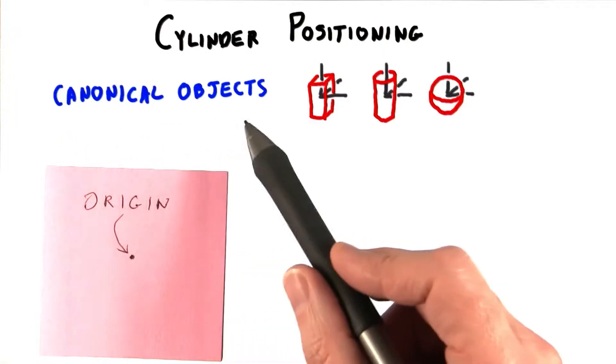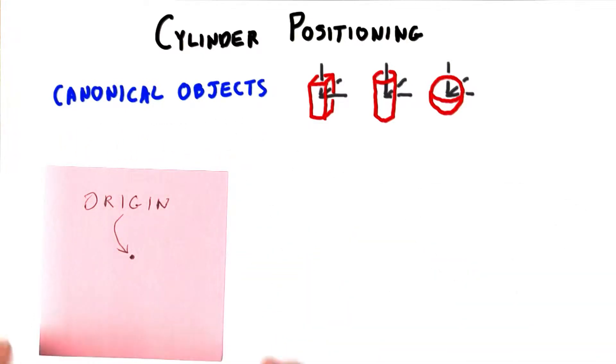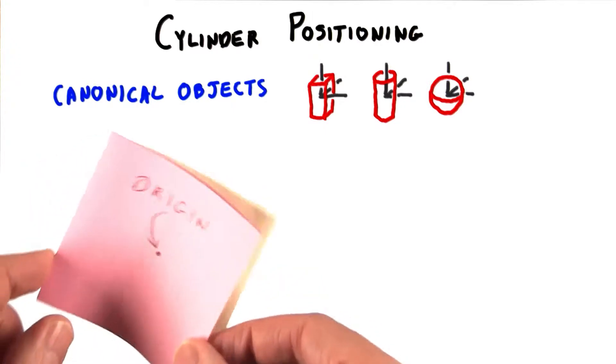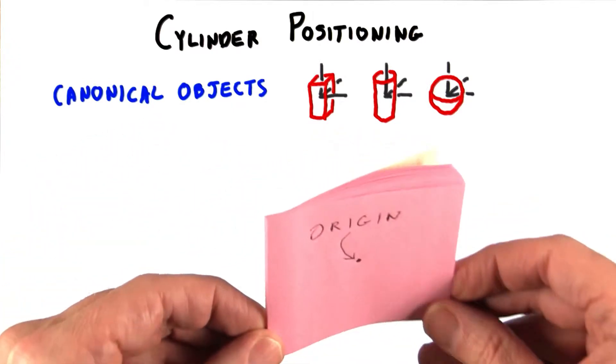Three.js tends to create what are called canonical objects. This is where you create an object centered around the origin and then apply a series of transforms to move it into position.